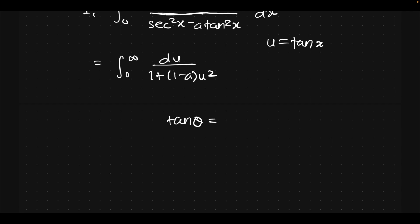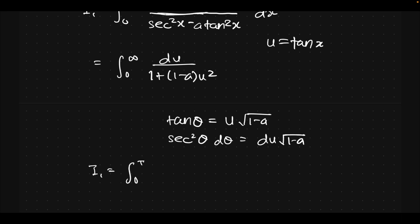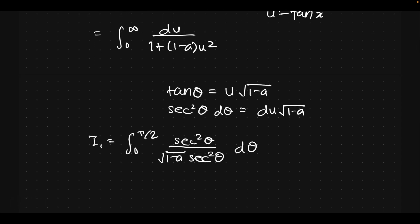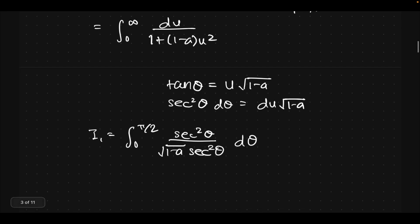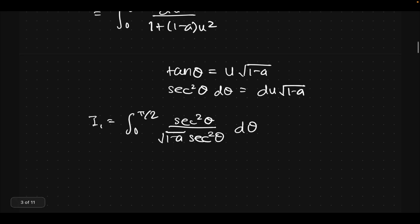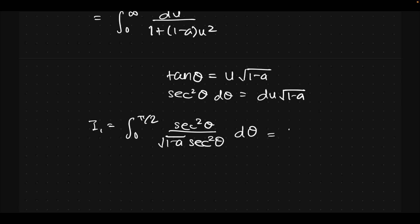We get du over (1 plus (1−a)u²). Then the trigonometric substitution tan θ = u·√(1−a), so sec²θ dθ = du·√(1−a), and I₁ becomes the integral from 0 to π/2 of sec²θ over (√(1−a)·sec²θ) dθ. This cancels and we just have a π/2 factor, giving π/2 · 1/√(1−a).